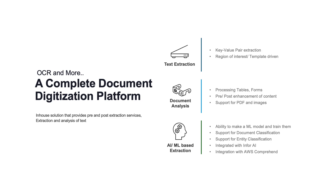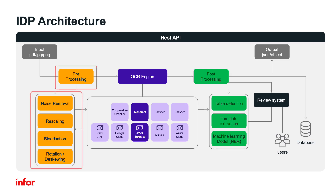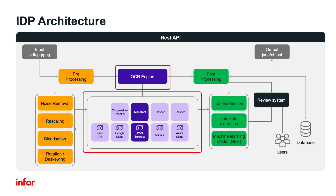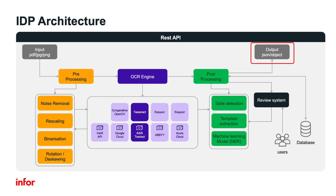boosting efficiency, reducing errors, and lowering costs. IDP's architecture consists of several key components. Inputs: it accepts PDF, JPG, or PNG files. Pre-processing involves noise removal, rescaling, binarization, rotation, and deskewing to prepare documents for data extraction. The OCR engine then extracts text from the documents. Post-processing includes table detection and template extraction to organize and interpret the extracted data,